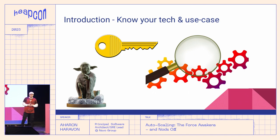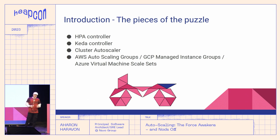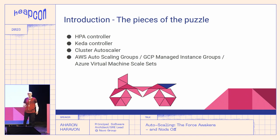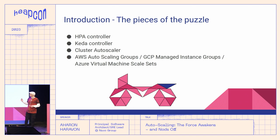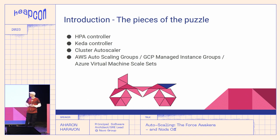The service SLA and processing times have direct implications on the autoscaling requirements. Also, the autoscaling technology limitations may impose business constraints or limit available cost-saving opportunities. To succeed in designing cost-effective autoscaling solutions, we need to get familiar with both the underlying technology and the use case we are addressing. Horizontal autoscaling in modern applications involves interaction of four different systems, each with its own role. We will closely examine the HPA controller, the KEDA controller, the cluster autoscaler, and the AWS autoscaling groups.